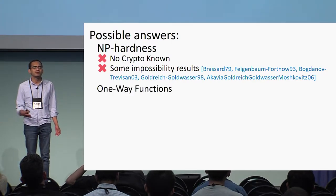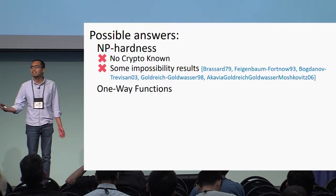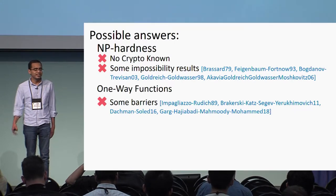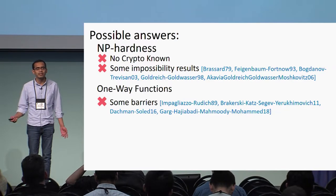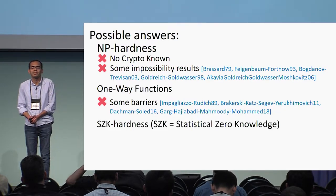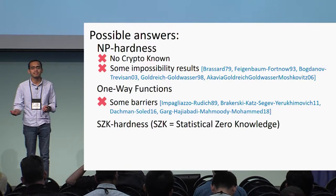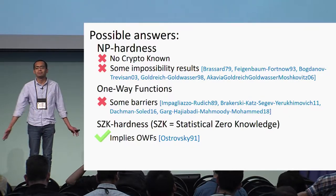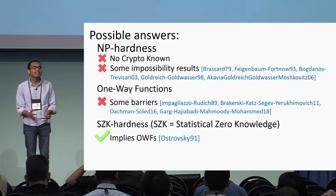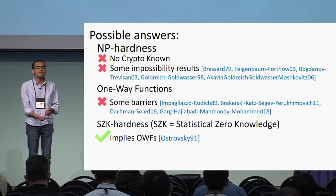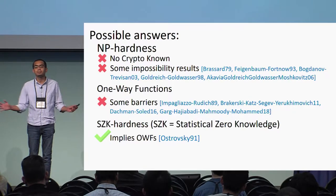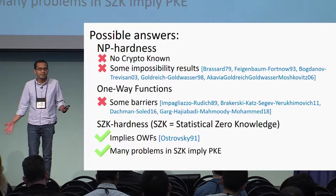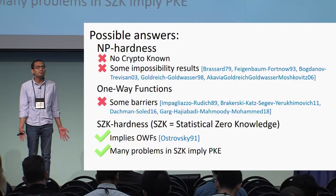The next best thing would be to say that if one-way functions exist, then public key encryption also exists. Again, this seems like a fairly difficult problem. So let's look at something which seems more reasonable: this class of statistical zero knowledge problems. There are a few things this class has going for it. First, we don't know any impossibility results for this class. Second, we know that it actually implies one-way functions. And we also know that many problems which imply public encryption lie in this class, so it looks like a promising place to look.